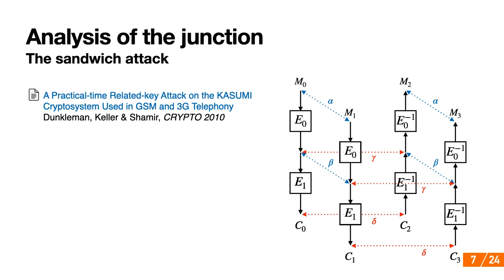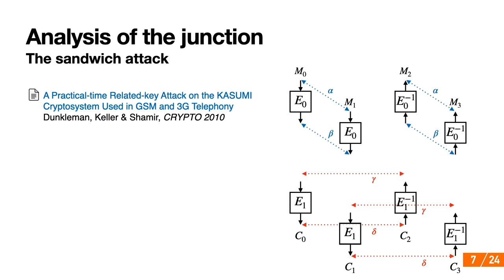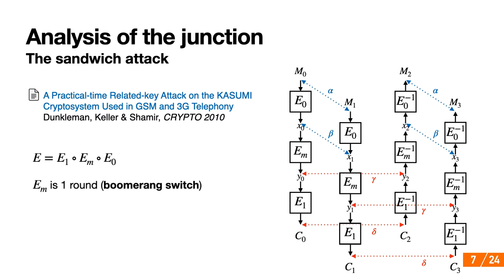In this setting, the cipher is divided into three parts instead of two. E0 and E1 are still here, but in between there is a middle part EM called the boomerang switch. If EM satisfies the requested differential propagation among the vertices with probability R, then the probability of the boomerang distinguisher is p²q²R. Usually R would be manually computed by looking at the equations linking E0 and E1. But then at Eurocrypt 2018, a new tool was introduced to easily evaluate the probability of the middle part for SPNs in the case where it covers one round. This tool was called the boomerang connectivity table, or BCT for short.